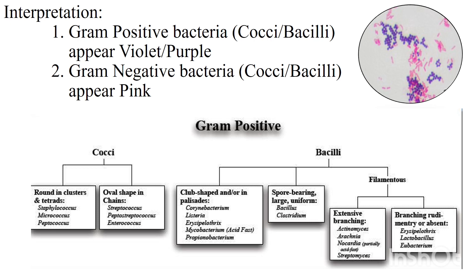There are about seven different techniques of Gram staining. The original one uses gentian violet, Lugol's iodine, absolute alcohol, and Bismarck brown.